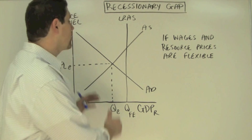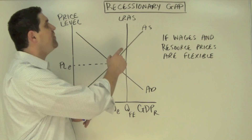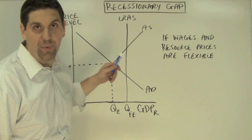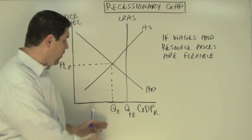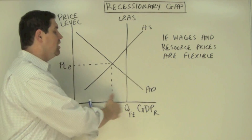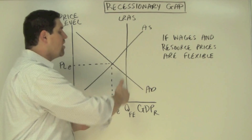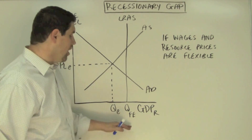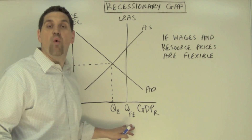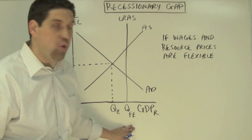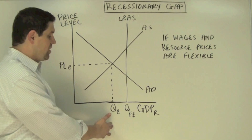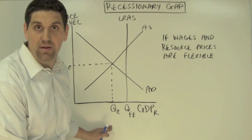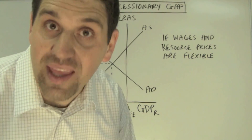To help with this question, I drew the graph. The graph you're looking at is for a recessionary gap. The real output we're producing is below or to the left of the long-run full employment GDP. So remember, if full employment is like 4 to 6 percent unemployment, we must have more than that — something like 8 or 9 percent unemployment. A recessionary gap.